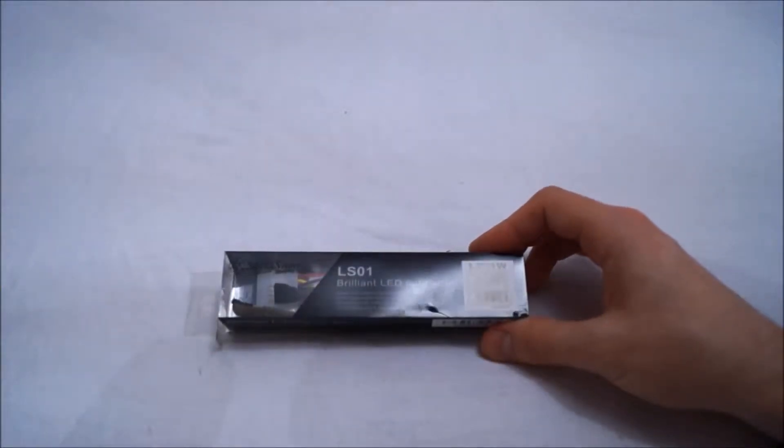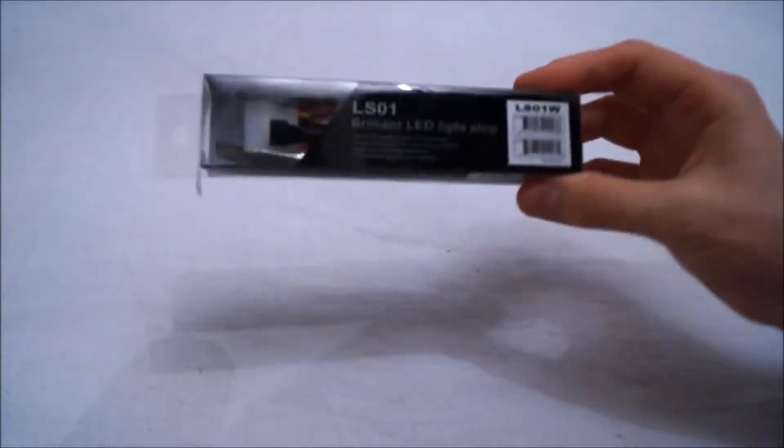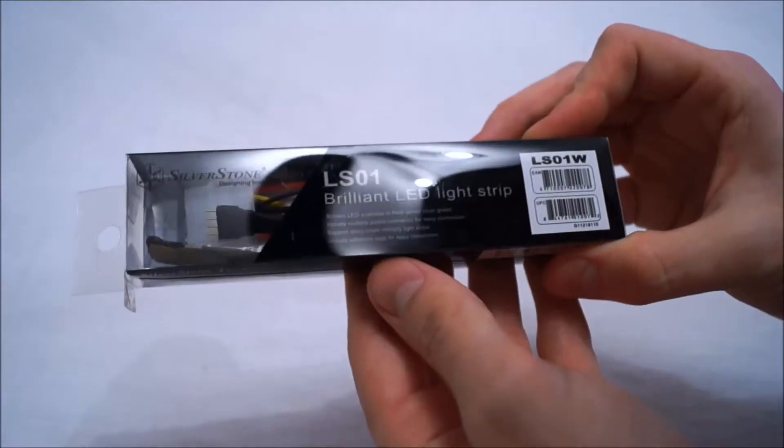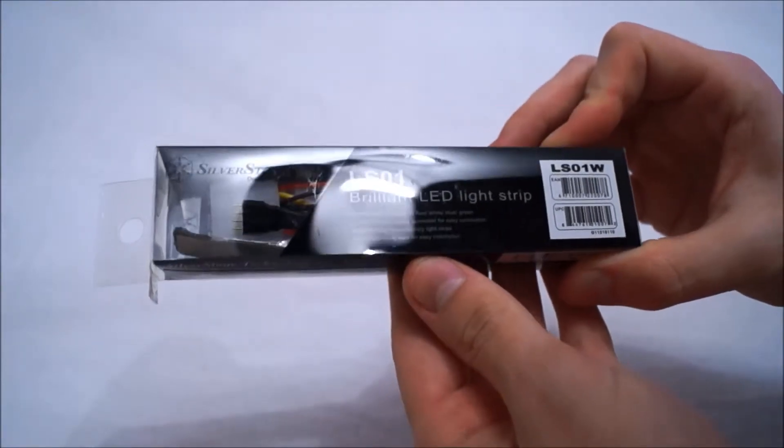Okay, so let's take a look around the very small box. There isn't really much to see. On the front we have brilliant LED light strip. Now we have the white version here.